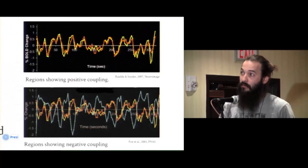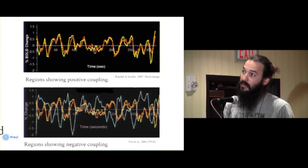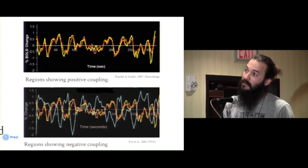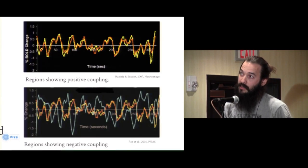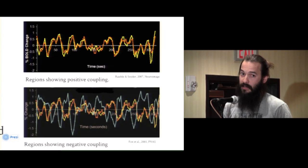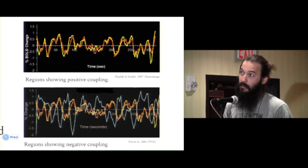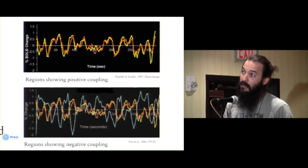Here we have two regions — the red and the yellow lines — which are positively coupled. You can see that over time on the x-axis, and this here is the percentage of BOLD change. BOLD is the signal in fMRI; it's an indirect measure of neuronal activity. It measures the change in oxygenation of the blood. You can see that these two regions are pretty close over this time period, so they're pretty positively coupled together.